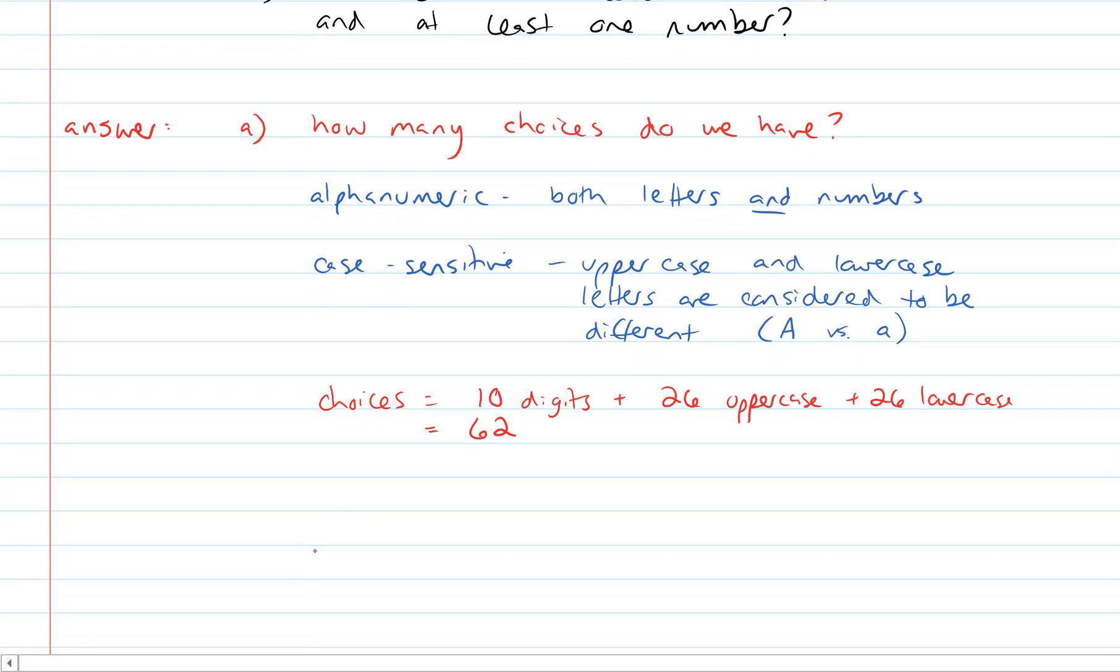Then our password. So let's take a look at the question again and recall the question is how many five-digit, case-sensitive alphanumeric passwords. So we've got five slots to fill in here. And since there are no other restrictions, we can have any of those choices in any of the slots. So 62 choices for each of the slots, and using the multiplication rule, we just get 62 raised to the power of five.